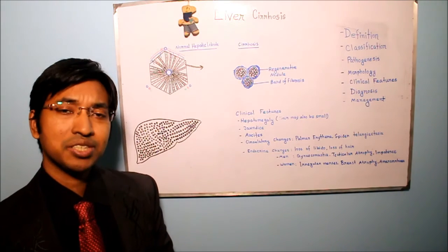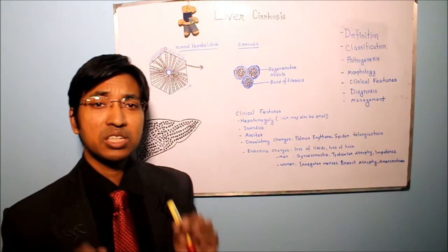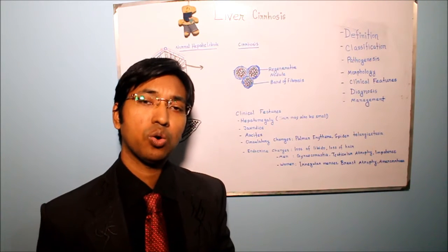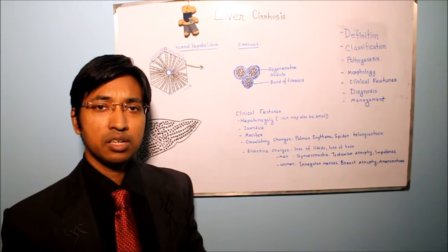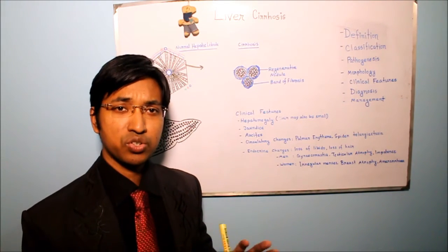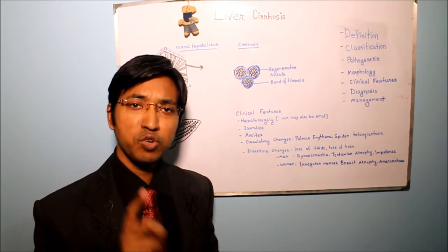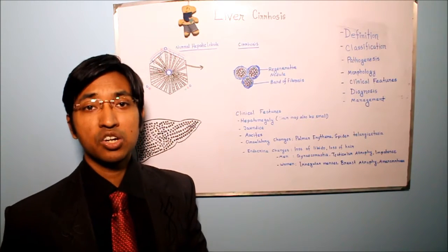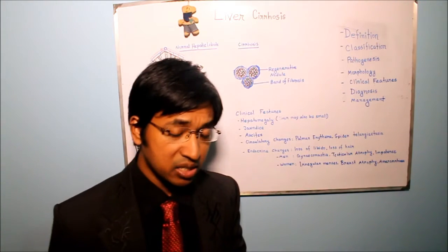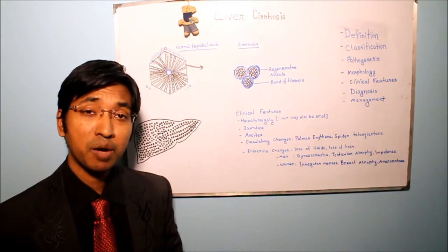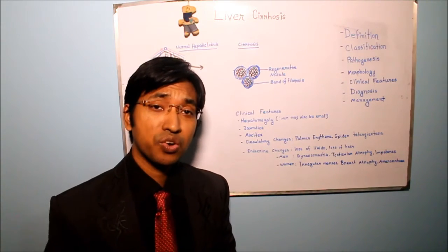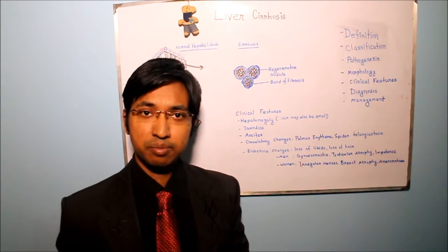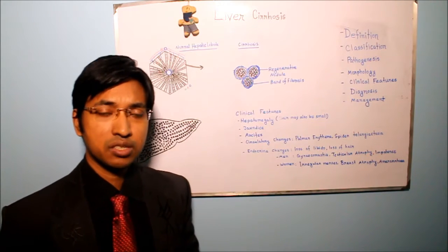The examiner may ask about other causes of palmar erythema besides alcoholic liver cirrhosis. The answer will include rheumatoid arthritis, thyrotoxicosis, polycythemia, febrile illness, chronic leukemia, etc. The examiner may also ask about the mechanism of palmar erythema in liver cirrhosis, and the answer will be high level of estrogen in the blood and also due to hyperdynamic circulation.